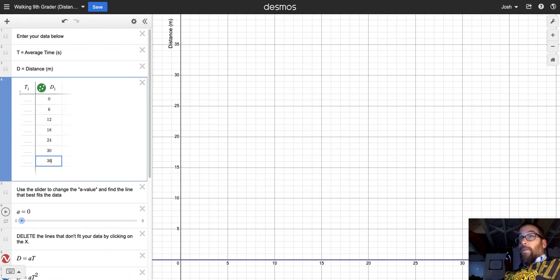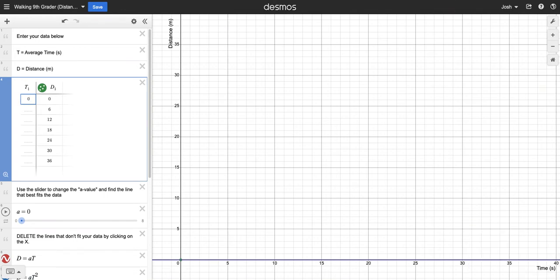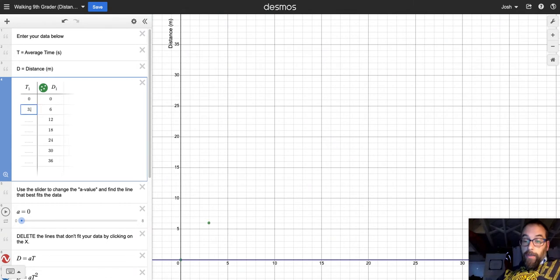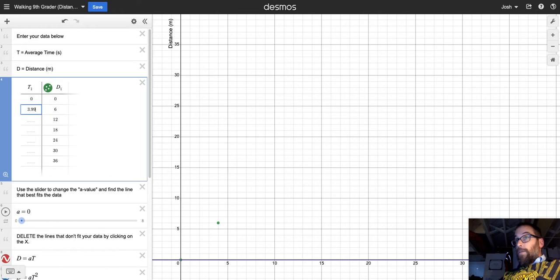Now, clearly at time zero we've gone nowhere, so the distance is also zero. According to my spreadsheet, at six meters, 3.99 seconds has elapsed, and at 12 meters, 8.18 seconds. So I'm going to put those in there now. It took 3.99 seconds to get to six meters and 8.18 to get to 12 meters.